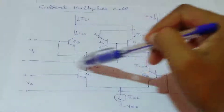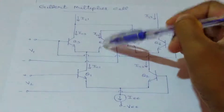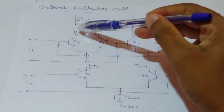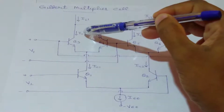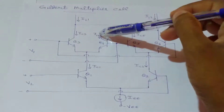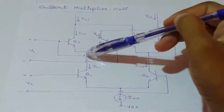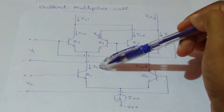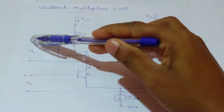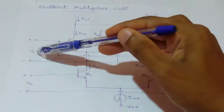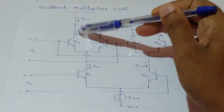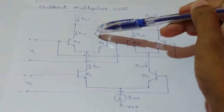First, consider the emitter coupled transistor pair formed by transistors Q3 and Q4, with collector currents IC3 and IC4. We have already studied how to write these equations in a previous class on analog multipliers. For this pair, the biasing current is IC1, and the differential input is V1. The positive of V1 is connected to the base of Q3 and the negative to the base of Q4.